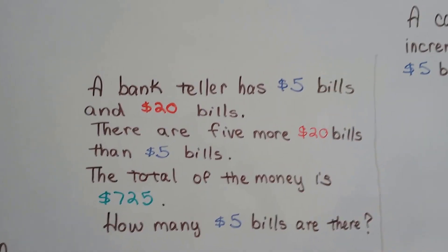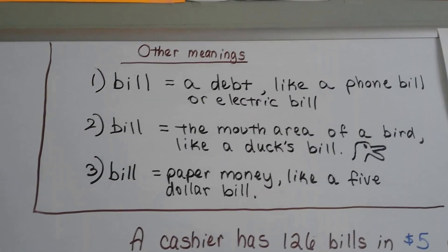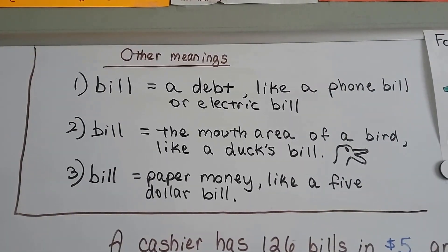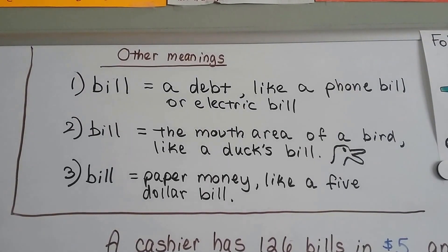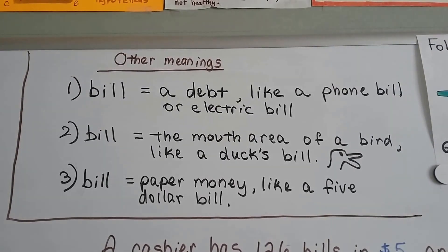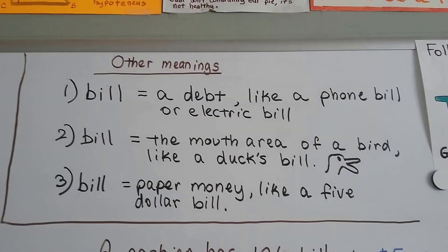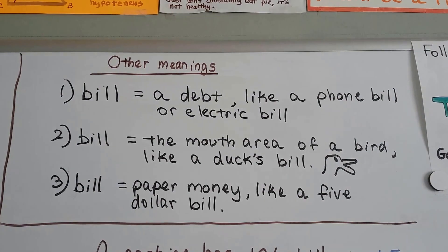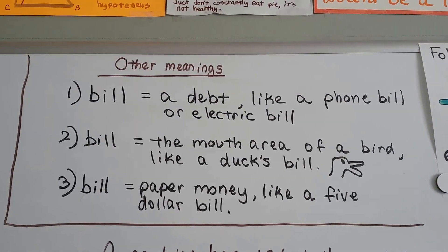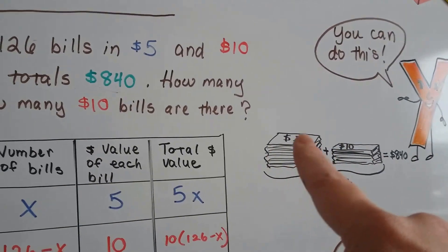For my subscribers and viewers that are a little confused because, believe it or not, half of my viewers are not in the U.S., a bill can be a debt, like a phone bill or electric bill. It can also be the mouth area of a bird, like a duck's bill. But a bill can be paper money, like a $5 bill or a $1 bill or a $20 bill. It's the paper money.